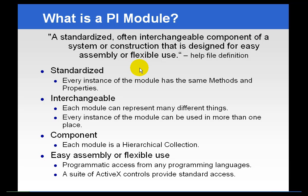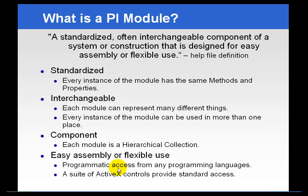Modules themselves are nice because they are standard — there aren't different types of modules, basically just one kind. It has methods and properties, they're interchangeable, and every module can represent different things. You can even use instances of modules in more than one location in the hierarchy. So if you want to set up a view based on equipment, you can do that, and you can also have another view side by side based on process. A module can live in different places and still reference the same tags or points. Each module is a component in a hierarchical collection, meaning users can click and drill down through that hierarchy. We also provide programmatic access to the module database, so if somebody wants to use it programmatically — similar to the way ACE does — they can do that.